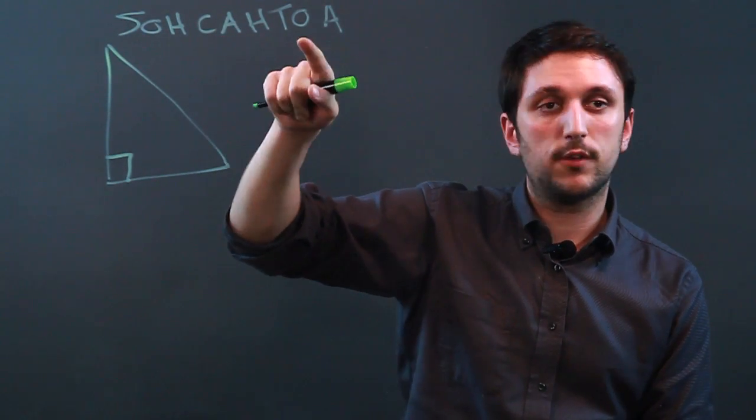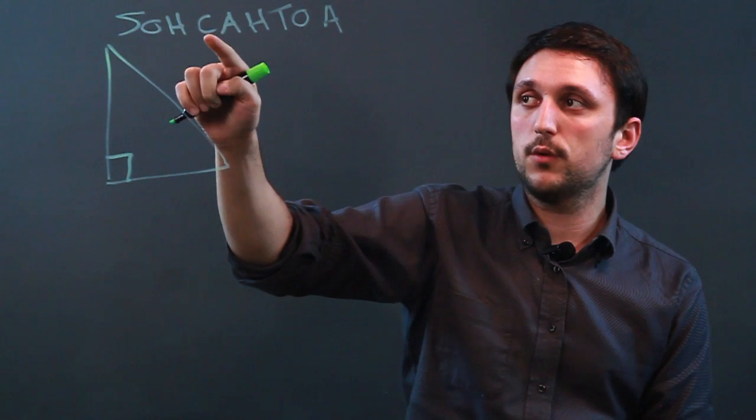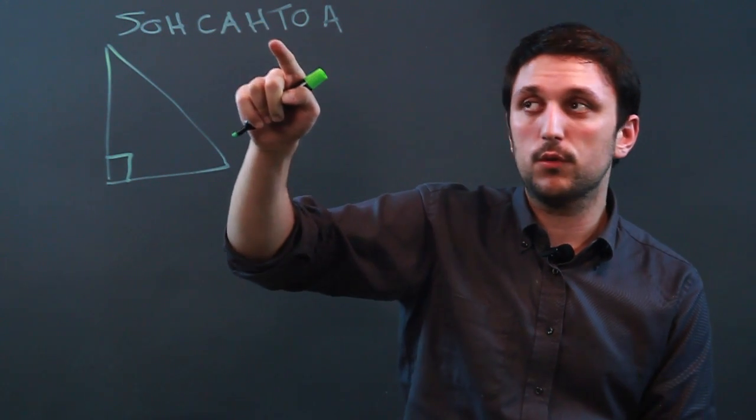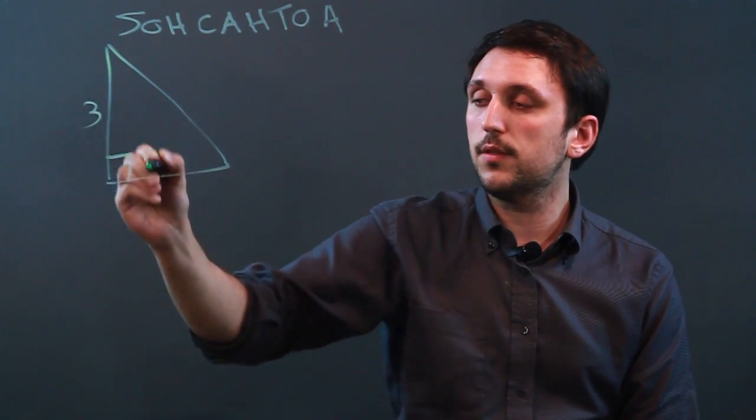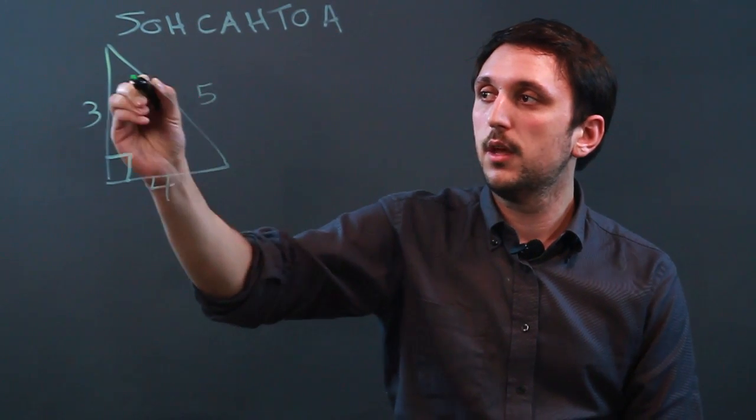So CAH is cosine equals adjacent over hypotenuse, and TOA is tangent equals opposite over adjacent. So if we say that this is 3, 4, 5, and we call this up here angle A, then the cosine of angle A equals the adjacent over the hypotenuse.